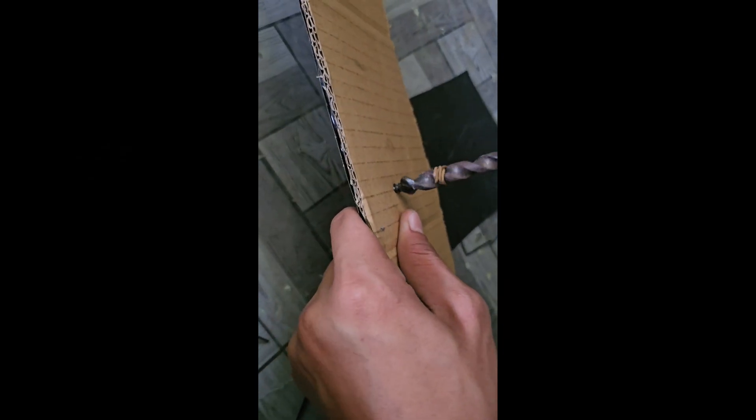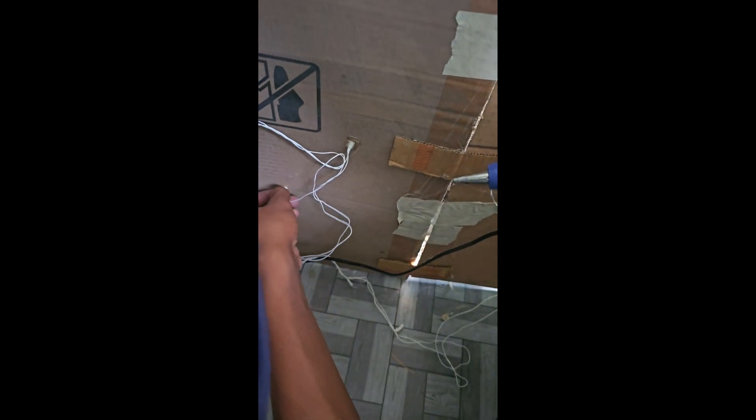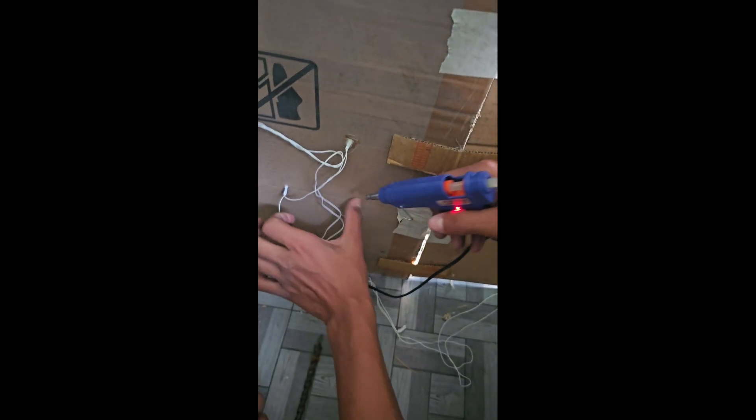Make small holes on the cardboard and a little bit bigger hole in the center of the board. Put the bulbs used in Diwali in small holes and DC motor in the bigger hole of the board.